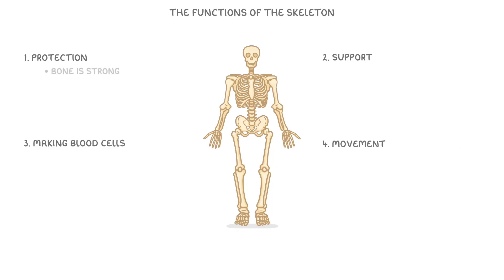As we mentioned previously, bone is strong and this means it helps to protect organs from damage. For example, your skull protects your brain and different bones protect other vital organs such as the heart and the lungs.